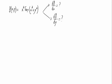Given the function x squared times the tangent of x squared plus y squared, let's calculate the partial derivative with respect to x and y. We can see that f is a function with two variables, x and y.